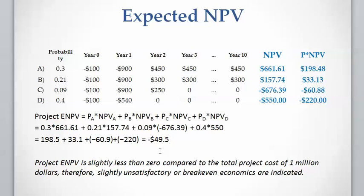The conclusion is that because the expected NPV is slightly negative — slightly less than zero — this project is not very economically satisfactory.